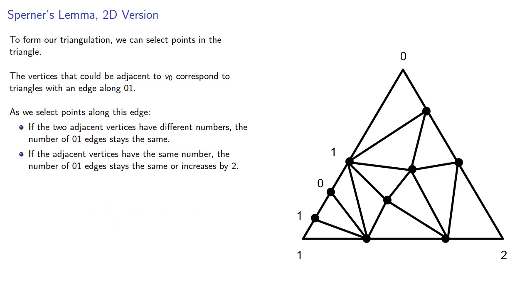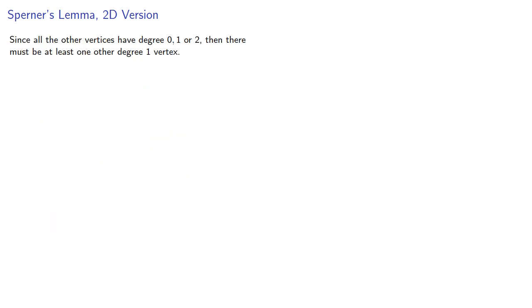Since we begin with one 01 edge, then the degree of V0 must be odd. And so by the handshaking theorem, at least one other vertex has odd degree. Since all other vertices have degrees 0, 1, or 2, then there must be at least one other degree 1 vertex.